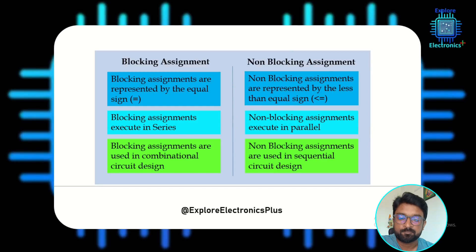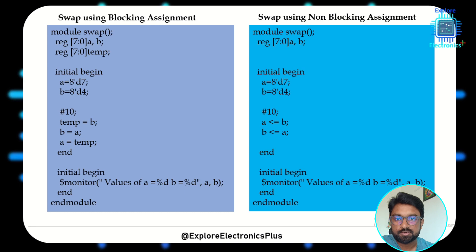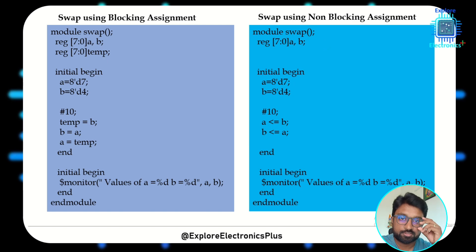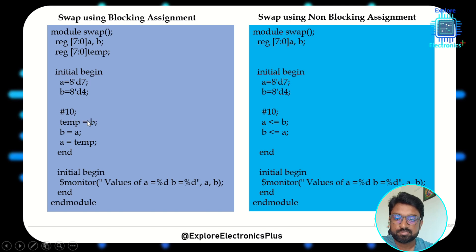Let's look at an example of swapping the contents of two registers. With blocking assignment, we require a temporary register. Here I've declared 8-bit registers a and b. In blocking assignment, we need a temporary register to hold one value first. So first temp = b, then b = a, then a = temp. These execute sequentially in that order.